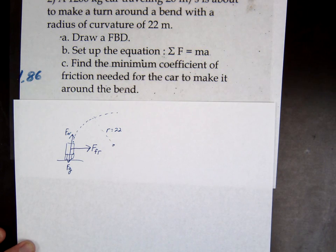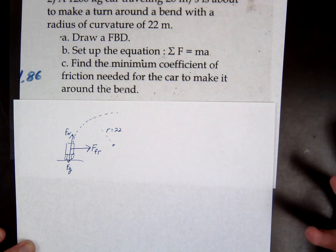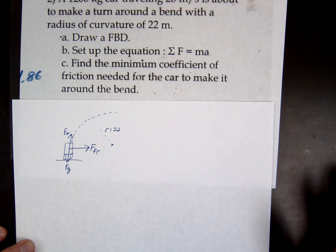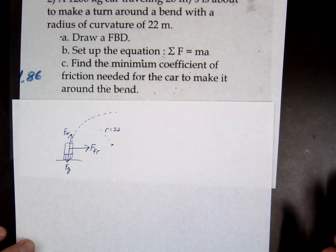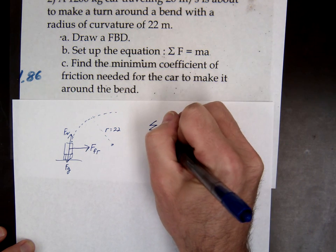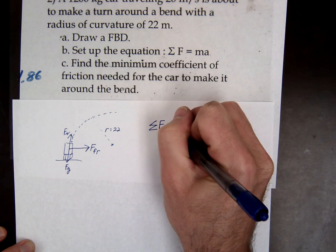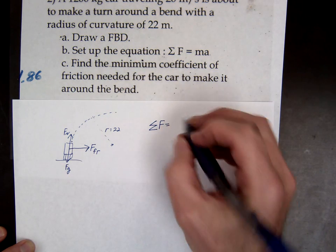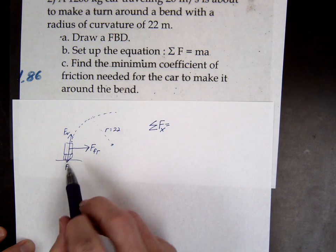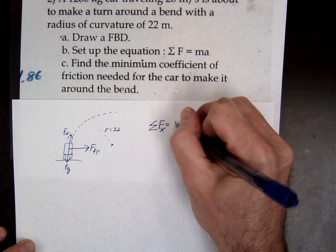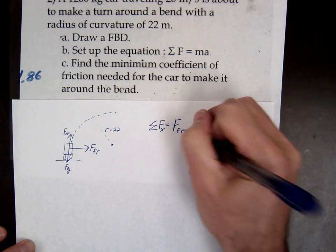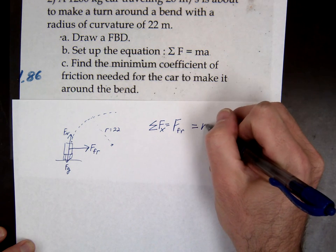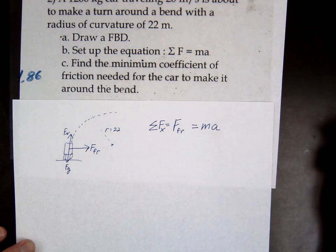Once we have our free body, set up your equations of motion. We're gonna sum up our forces. When you look at this picture, in the x direction we only have one force, that's the force of friction. We're gonna set that equal to ma.